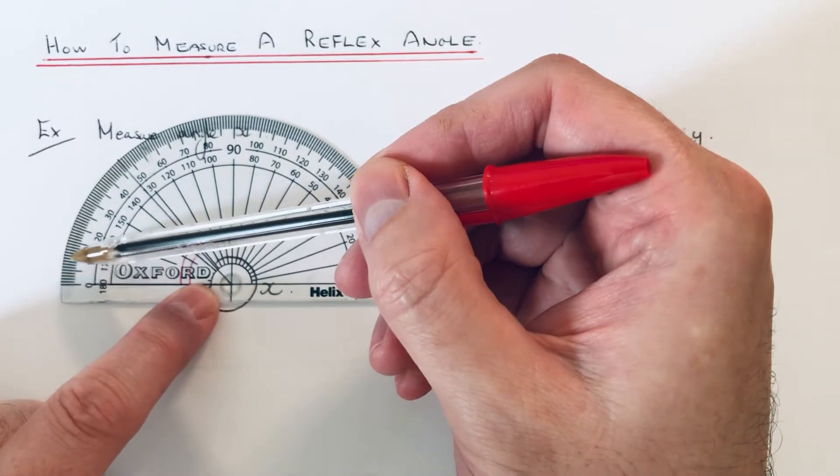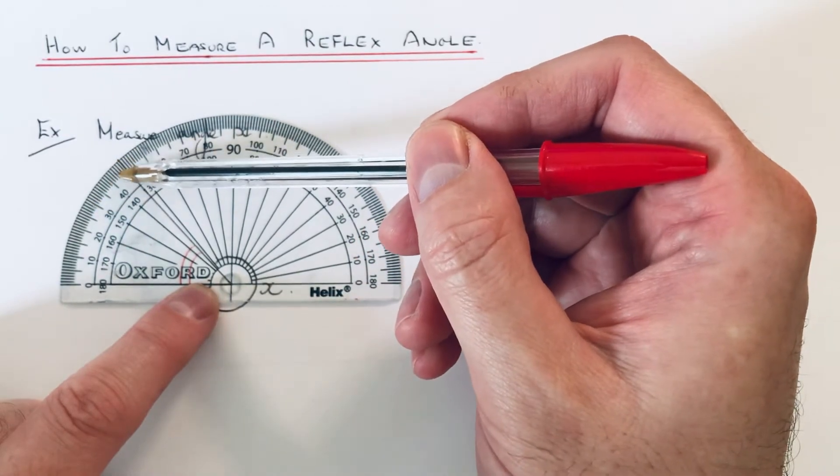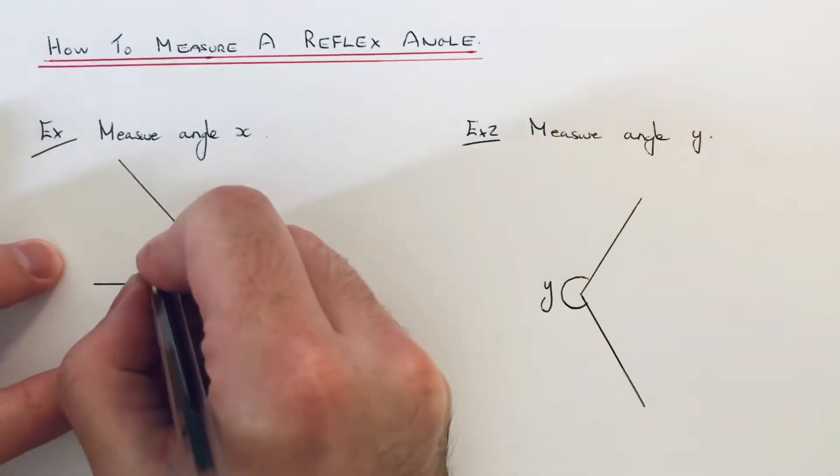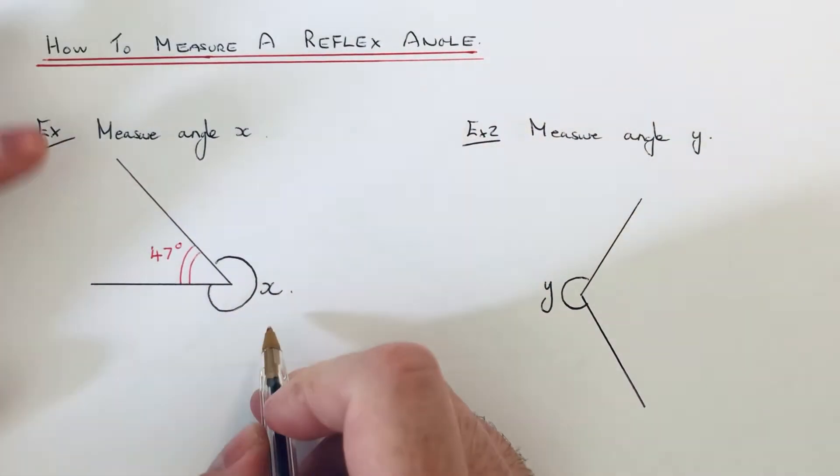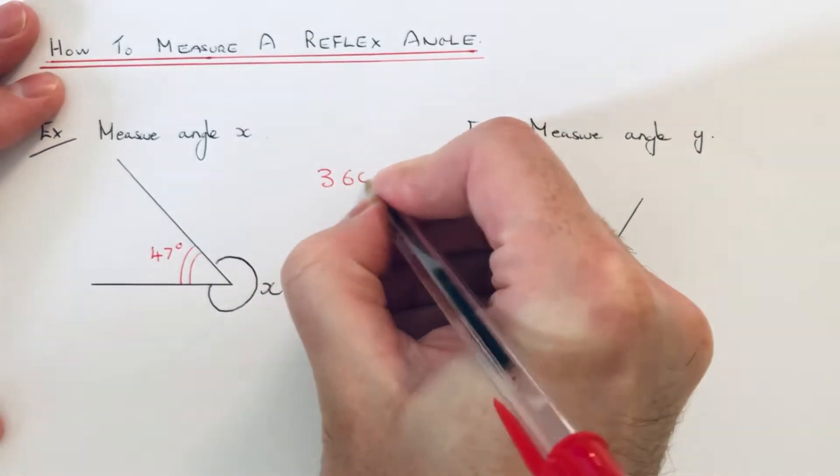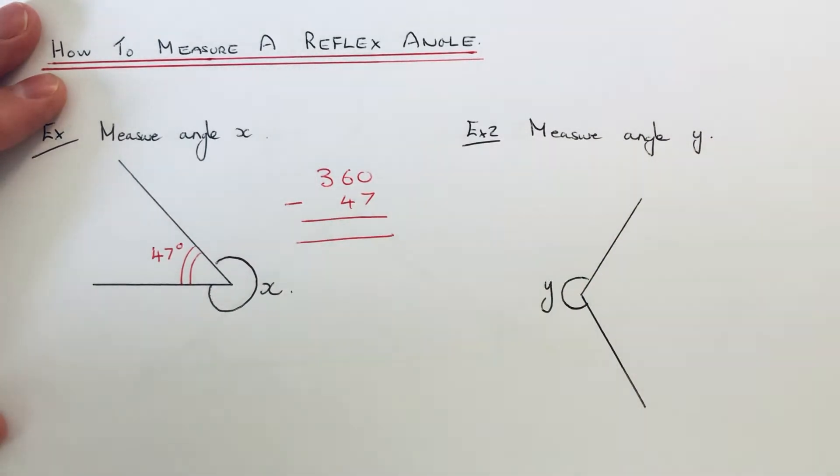a measure round on the outside, so about 10, 20, 30, 40, 45, 46, 47. So this angle here is 47 degrees. So if we take this 47 off 360, that will give us angle X. So 0 take away